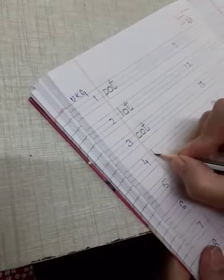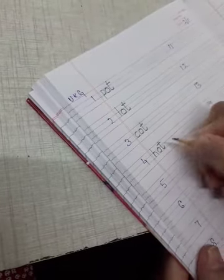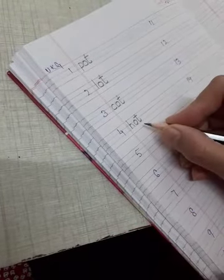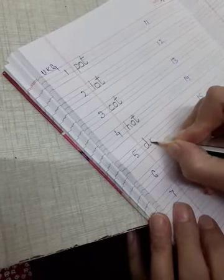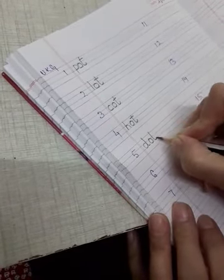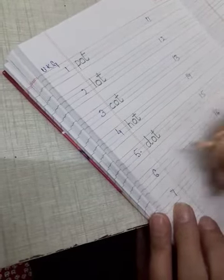Now next is hot, H-O-T hot. Now dot. Hot to pata hai na? Aapko kya hota hai? Garam. Dot, D-O-T. Dot kya hota hai? Chota bindu. Dekho ma'am kaise draw kar rahi hai. This is a dot.